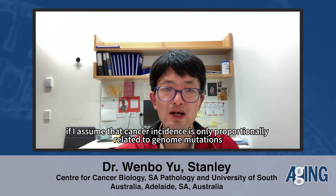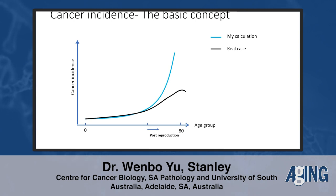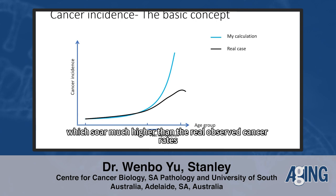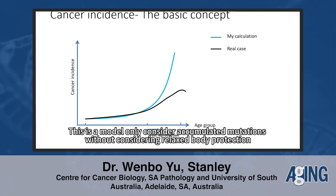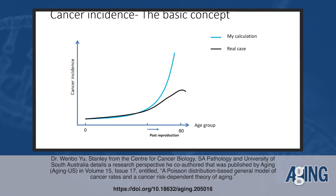However, if I assume that cancer incidence is only proportionally related to genome mutations, which accumulate randomly and constantly over time, I can model the incidence of cancer with a Poisson distribution. This results in an S-curve which is much higher than the real observed cancer rates. This model only considered accumulated mutations without considering relaxed body protection. This calculation allows me to make the assumption that our bodies are not abandoned, but protected during the aging process.